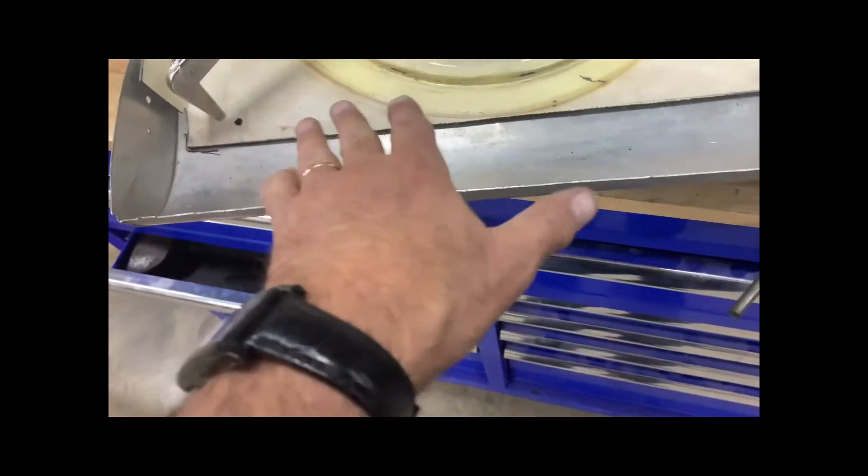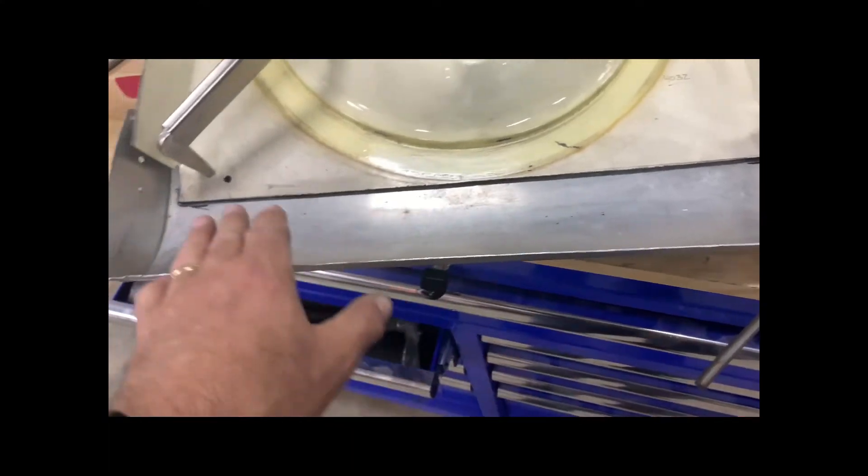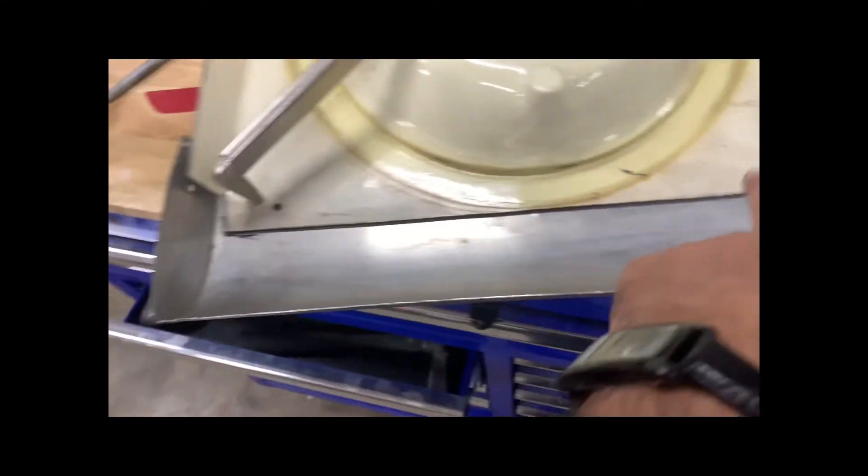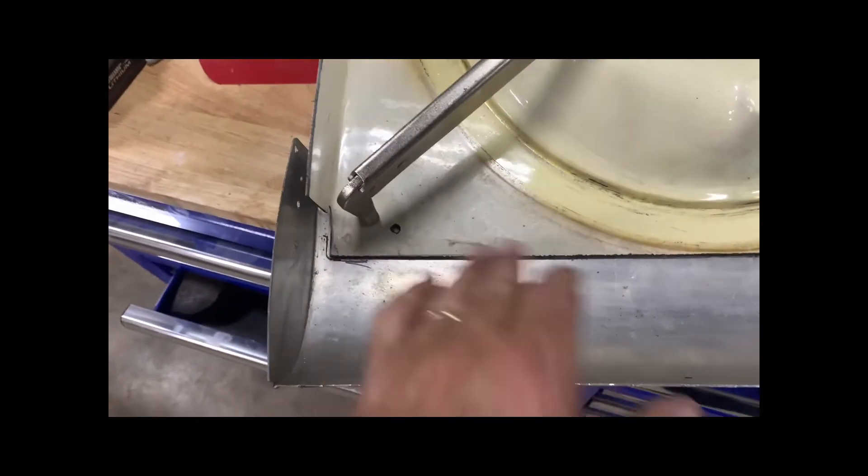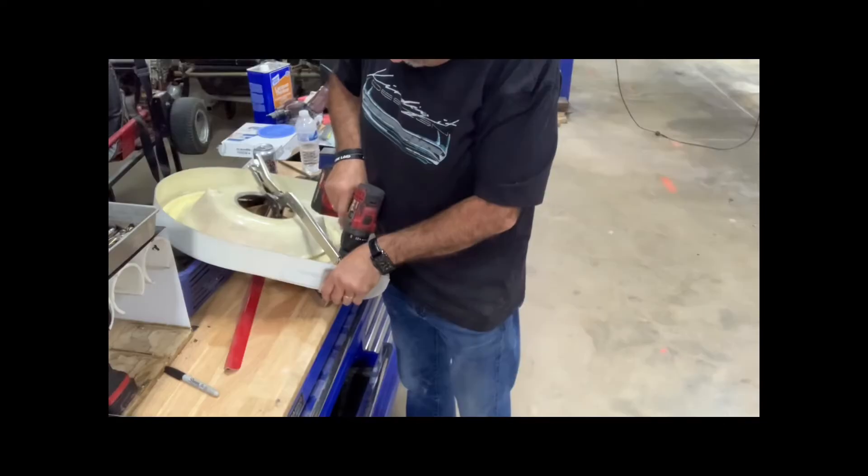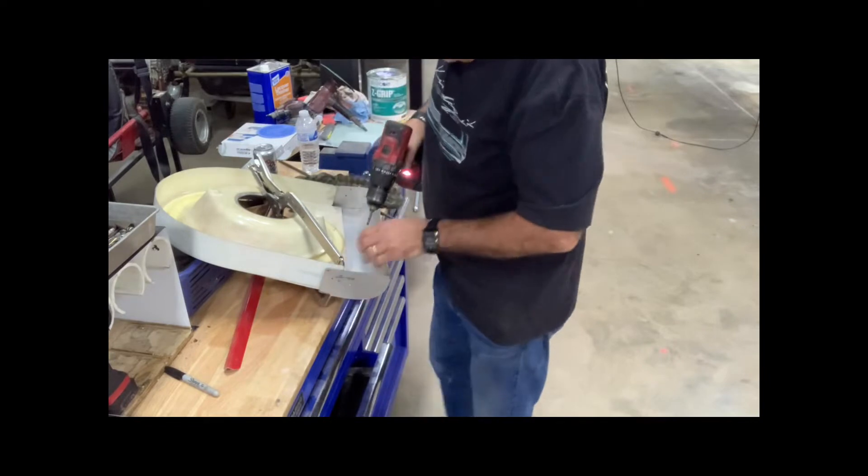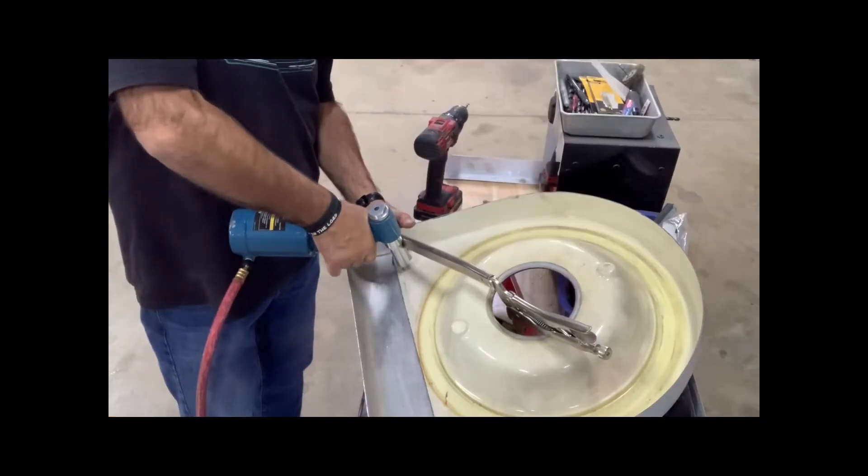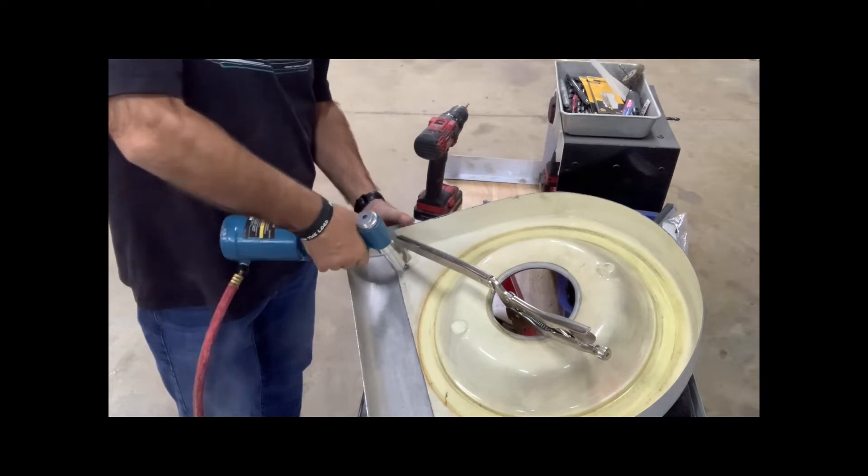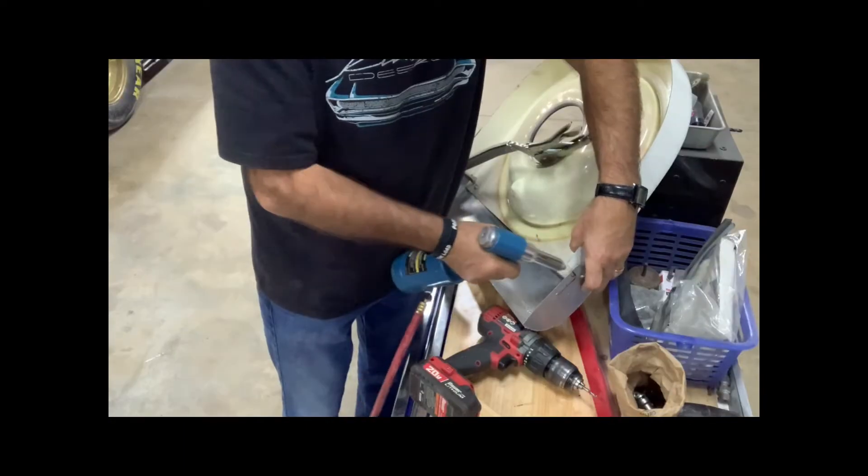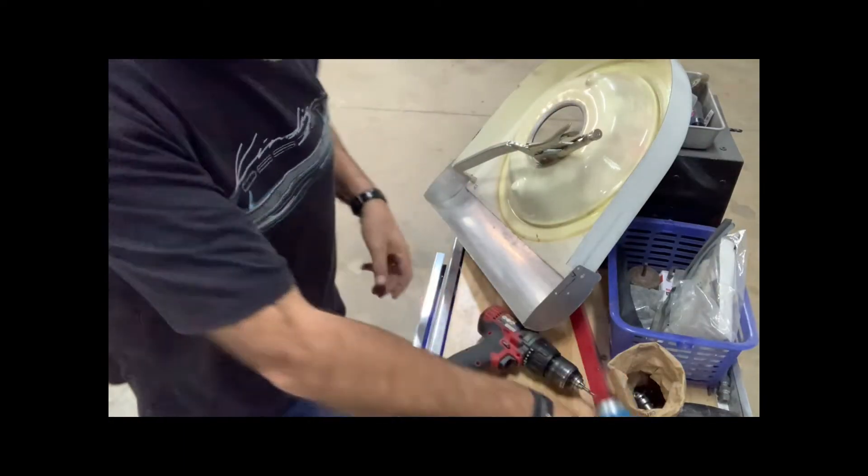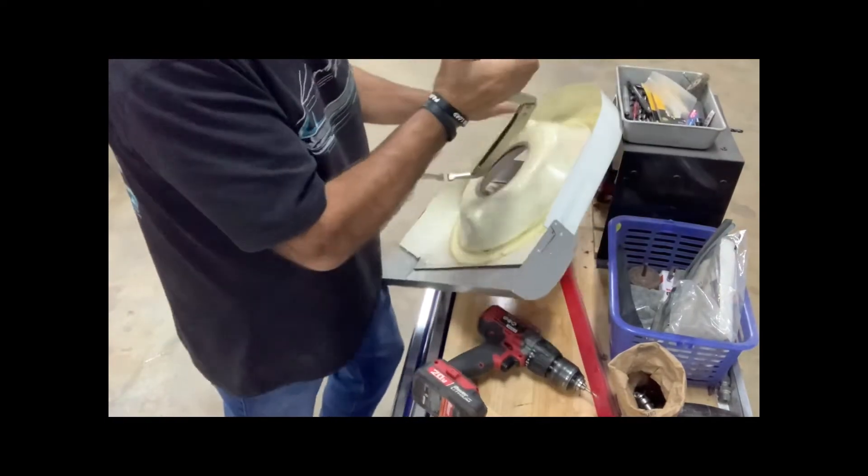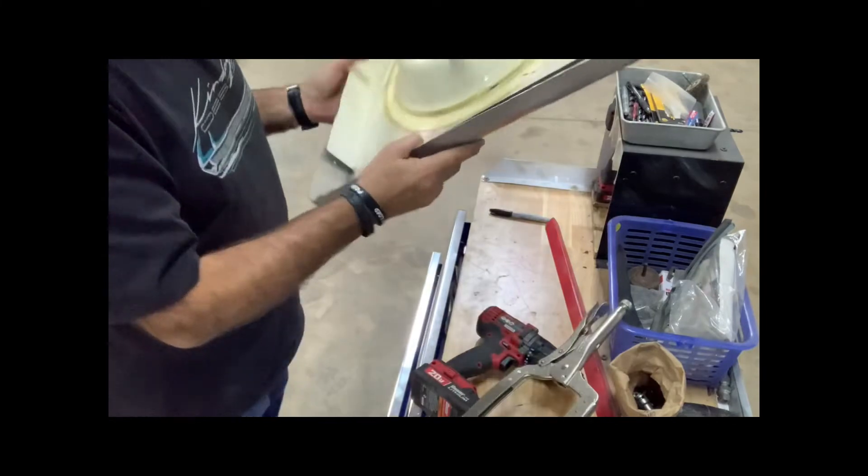Then we'll go... I may go ahead and pop rivet, actually, because I don't want to mess with the Zeus... I'm sorry, the Clicos popping out. So, we'll probably just put temporary aluminum rivet in here. So, that'll be fine. That's one side. That is solid as a rock now. There you go.